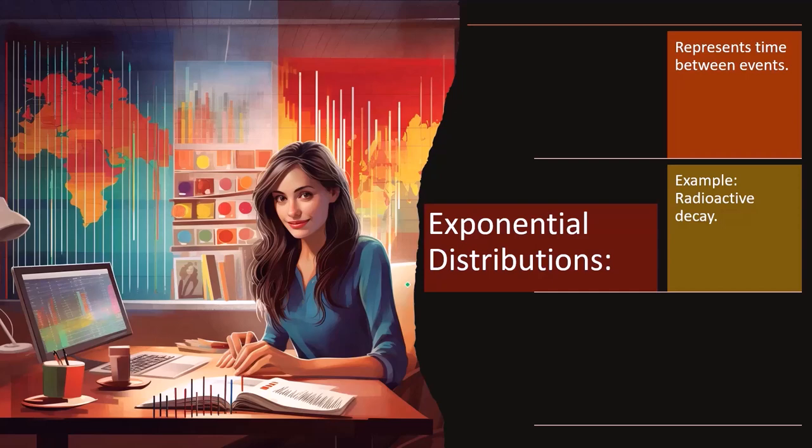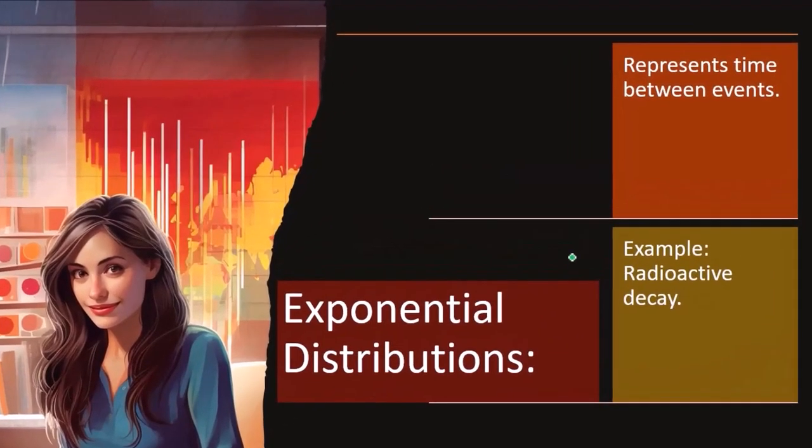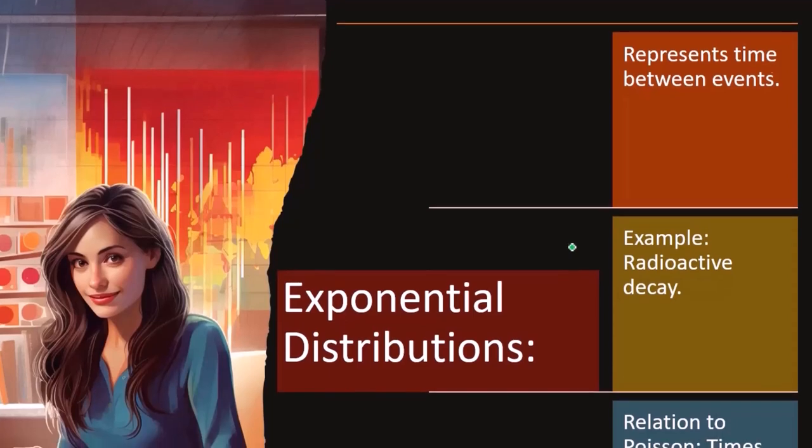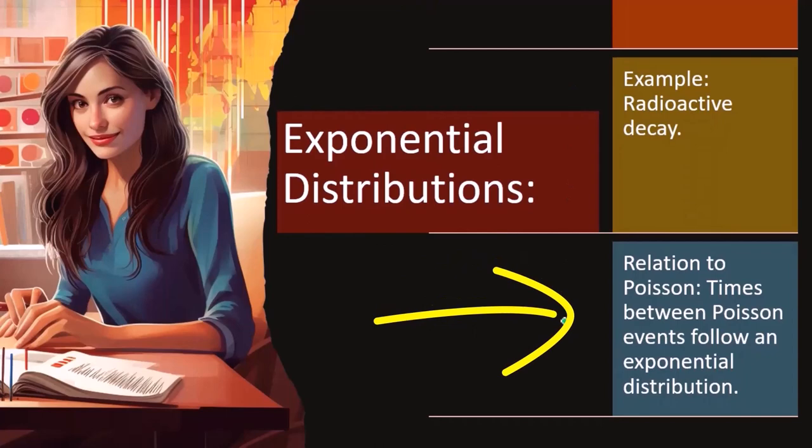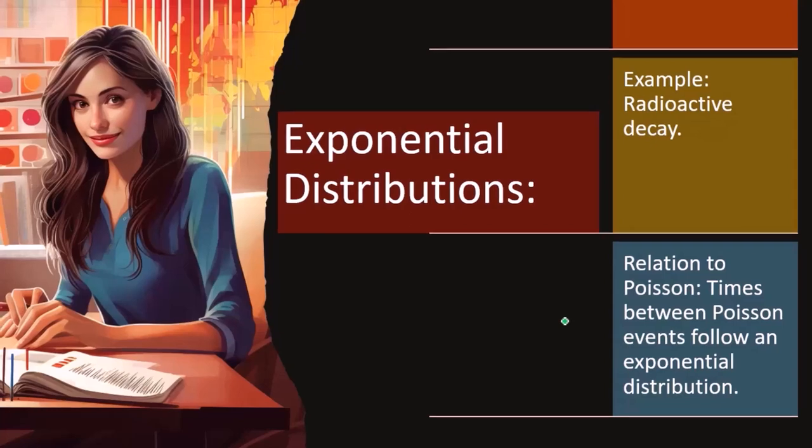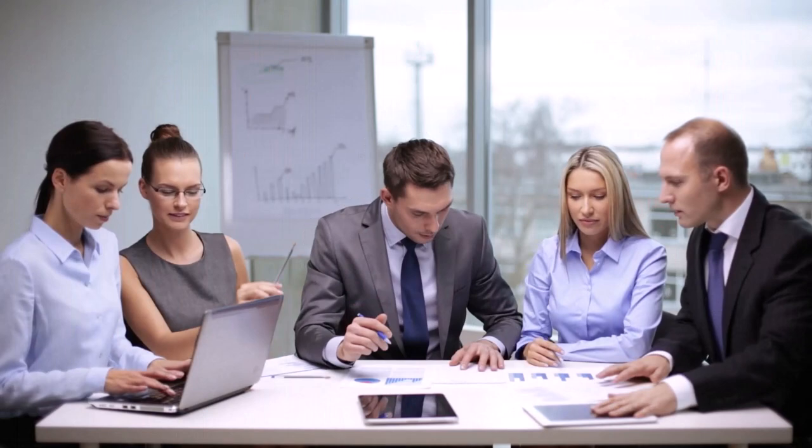So we'll take a look at those in future presentations, but you also have radioactive decay is another common example of the shape of the distribution, which we'll take a look at in a second here. Relation to Poisson: times between Poisson events follow an exponential distribution. So if you notice a Poisson distribution on the events, the time between events, then you would expect to follow an exponential distribution, which often happens in business scenarios with those line waiting situations. And it looks like this.